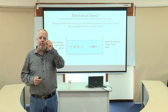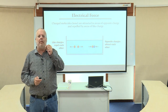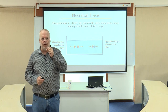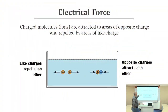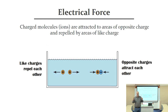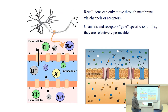The same is true for ions and for areas of electrical activity. Remember, the inside of the neuron is always negative. What we find is that unlike charges — two positive ions are going to repel — whereas opposite charges would attract.